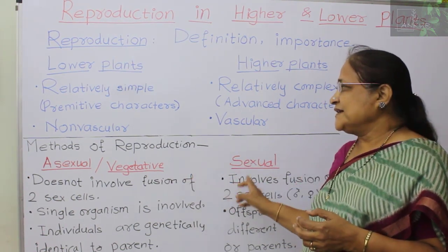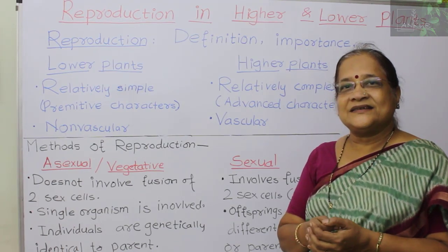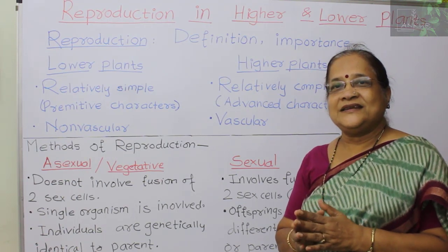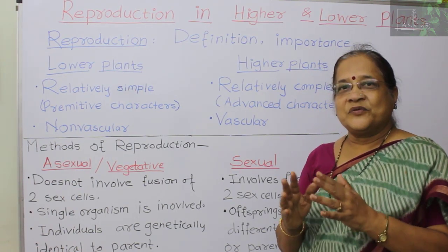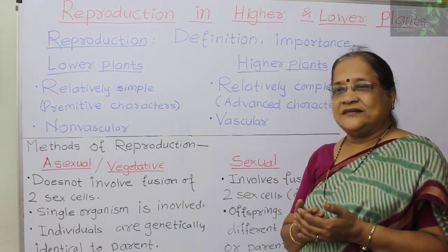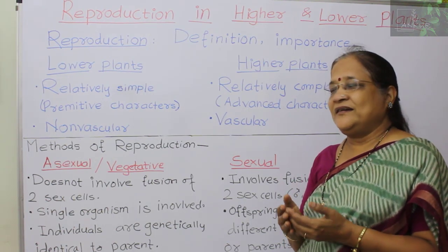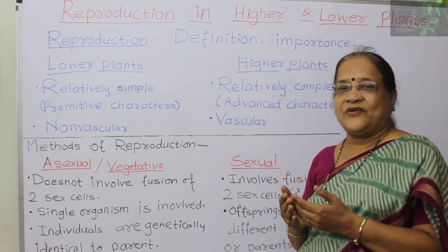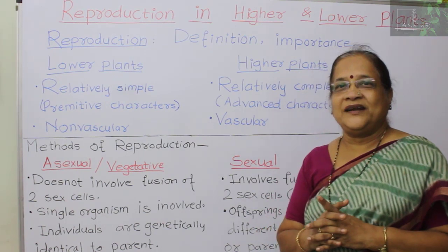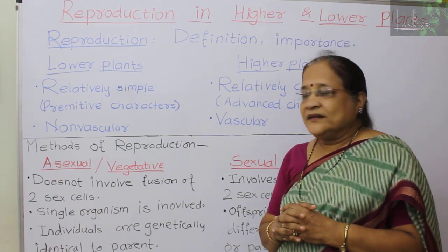The difference between asexual and sexual reproduction: in asexual reproduction, there is no involvement of two sex cells — no union or fusion of male and female sex cells. A single organism is involved in the process. After asexual reproduction, the individuals obtained are genetically identical or similar to their parent — such plants are called clones.